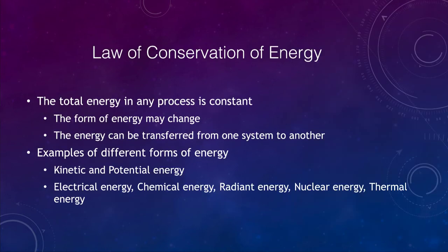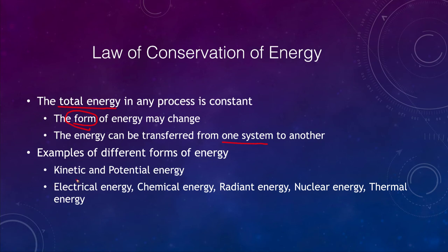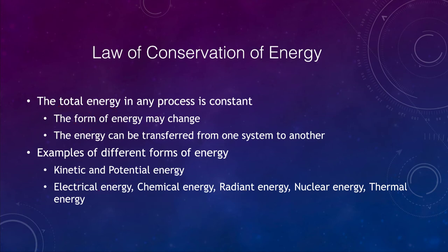The law of conservation of energy states that the total energy in any process is constant — what changes is the form of the energy. Energy can be transferred from one system to another and converted between types: chemical energy to kinetic energy, kinetic energy into potential energy. Other forms include electrical energy, chemical energy, radiant energy, nuclear energy, and thermal energy or heat. The total amount of energy always remains the same.